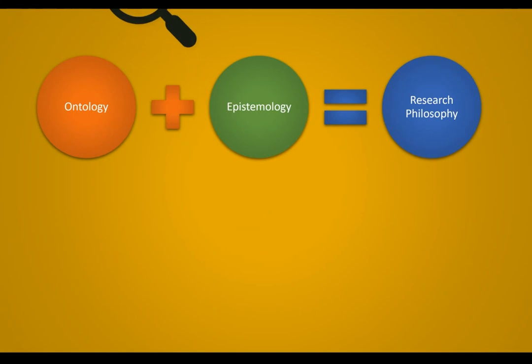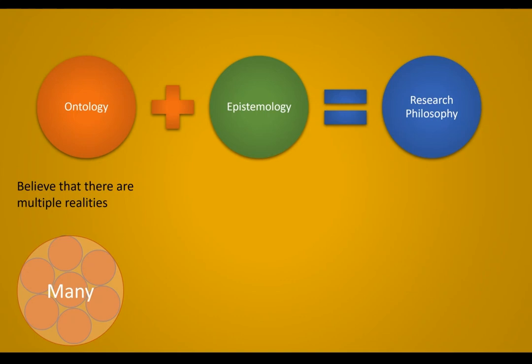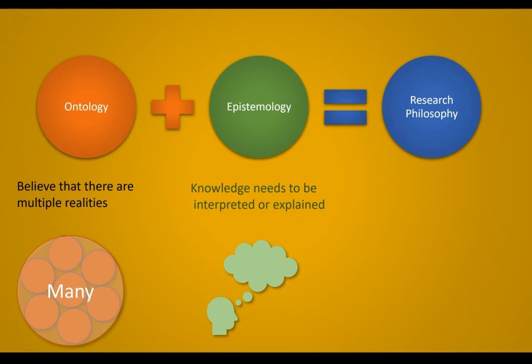Now the second ontological belief is that there are many truths and realities — not only one — and the knowledge can be interpreted rather than measured. With this epistemological and ontological approach of multiple realities and interpretation, we get constructivism. In constructivism we consider that there are many realities and they can be interpreted or explained. This is a philosophical approach where we mostly use qualitative research.